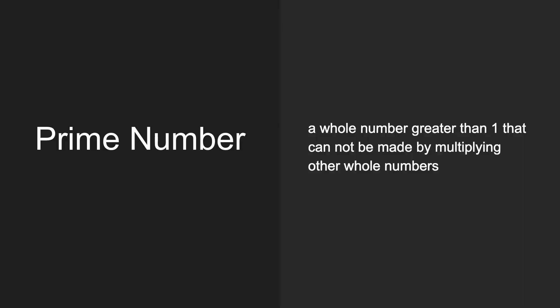First let's figure out what a prime number is in case you forgot — which I did. A prime number is a whole number greater than one that cannot be made by multiplying other whole numbers. Some examples are 2, 3, 5, and 7.